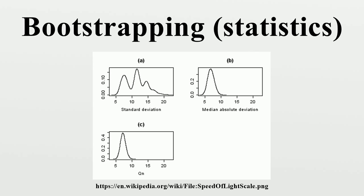Moving block bootstrap: In the moving block bootstrap, introduced by Kunsch, data is split into nb+1 overlapping blocks of length b. Observation 1 to b will be block 1. Observation 2 to b+1 will be block 2, etc. Then from these nb+1 blocks, nb blocks will be drawn at random with replacement. Then aligning these nb blocks in the order they were picked will give the bootstrap observations.